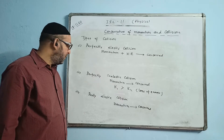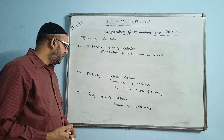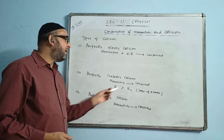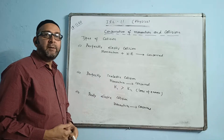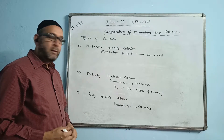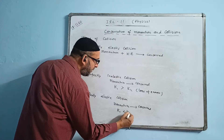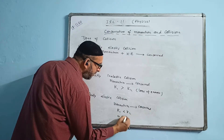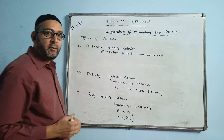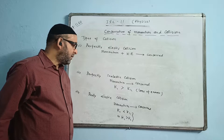In the last type of collision — partly elastic — kinetic energy can be greater or smaller. Both possibilities are there, but K1 and K2 will not be equal. K1 can be less than K2, or K1 can be greater than K2, but they will not be equal in a partially elastic collision.